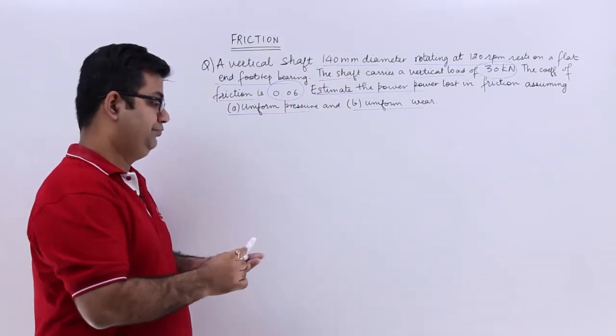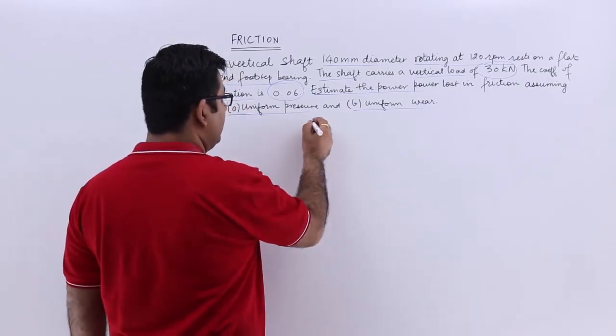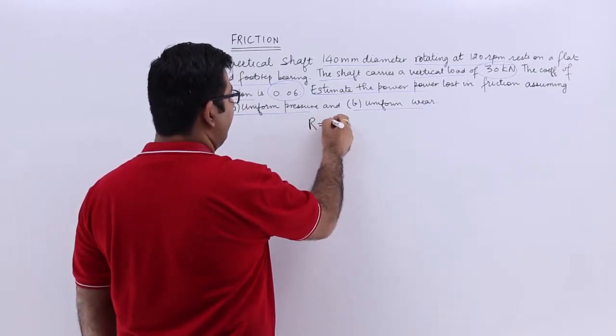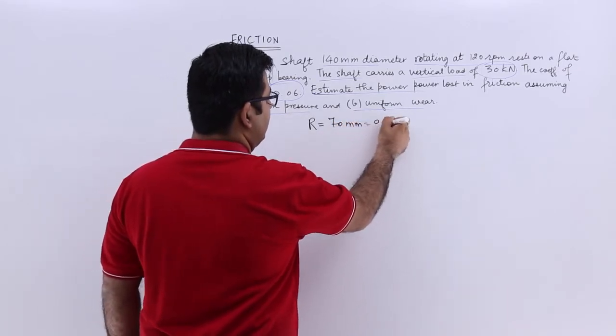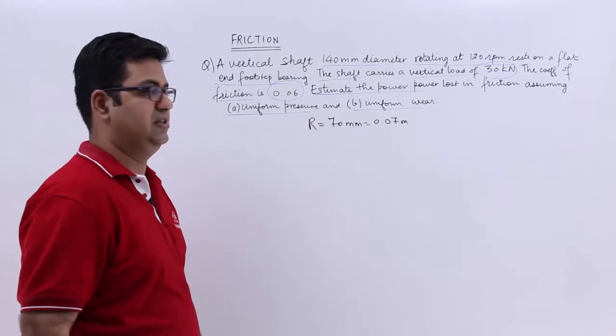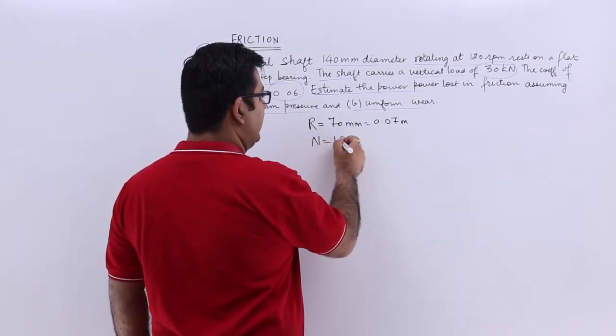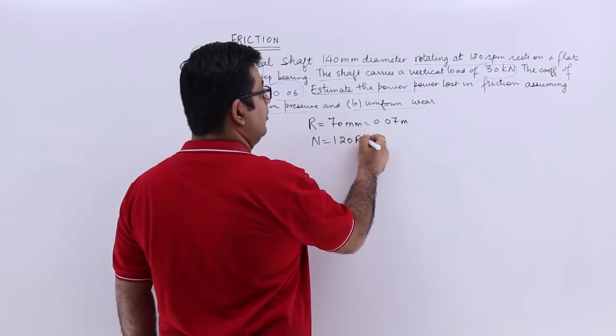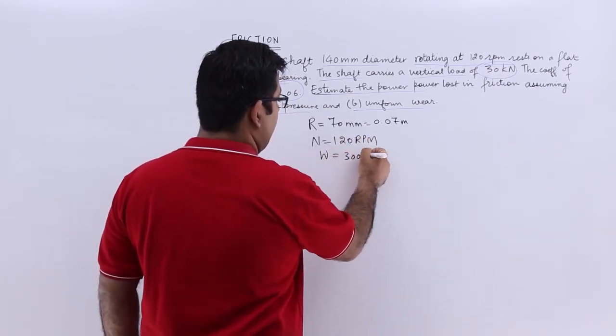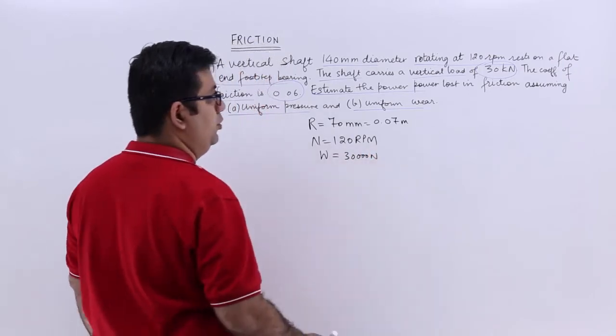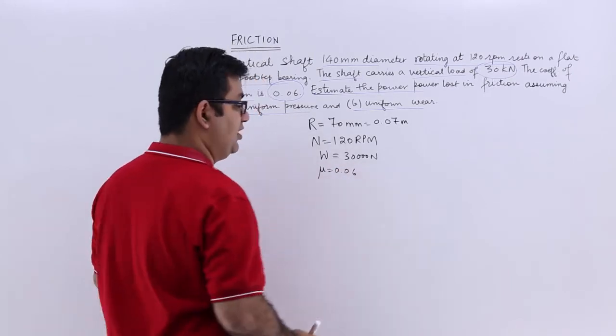So in the data given you have the radius as 70 mm which means it is 0.07 meters. RPM is 120 and the load is 30 kilonewtons or 30,000 newtons. The coefficient of friction is 0.06.